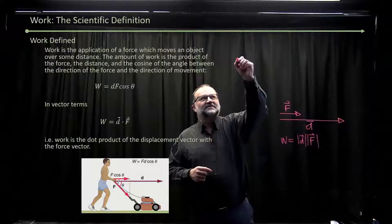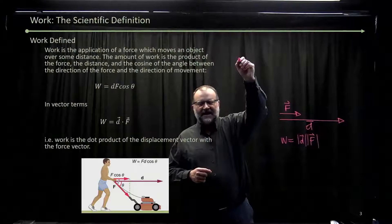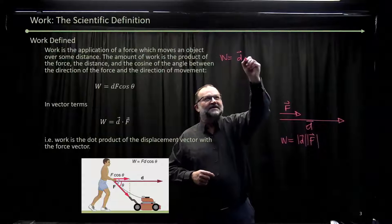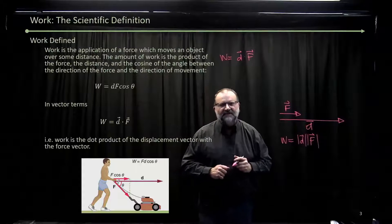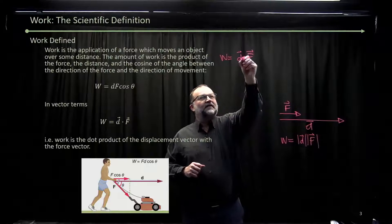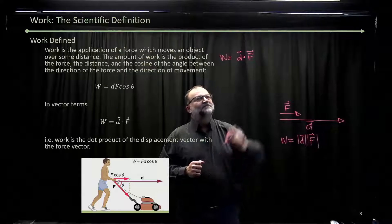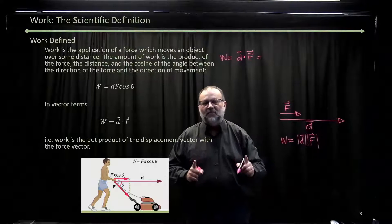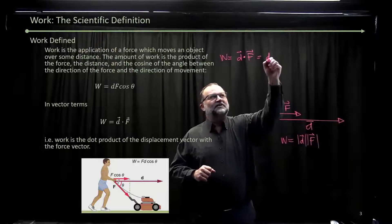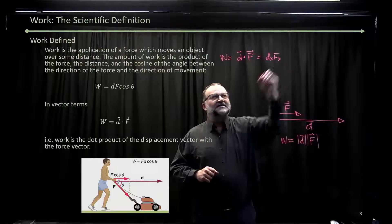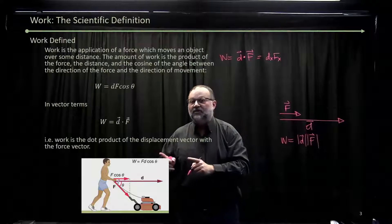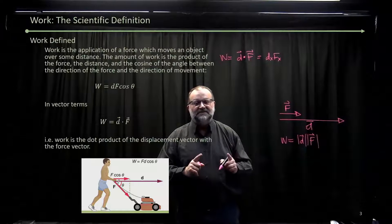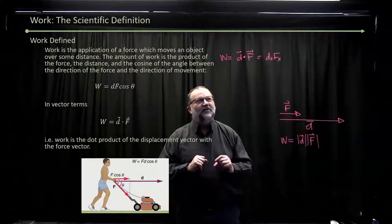And dot products are really simple. So if we take the work as d dot f, this is our first vector product. There's a little dot in there: d dot f. Well, this is just multiplying the components together. So dx times fx. Now work is a scalar. Work doesn't have direction. And what we get out of this is a scalar. The vector pieces disappear after the dot product.